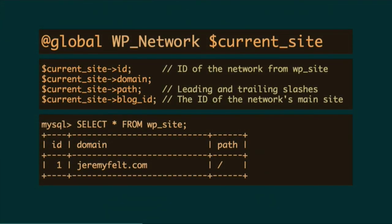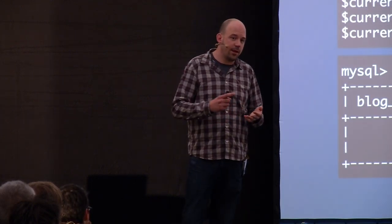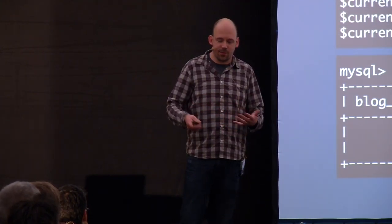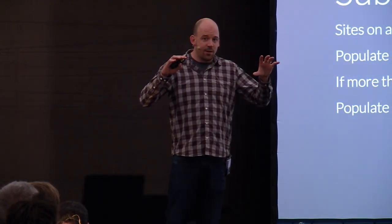The things it has to figure out first — there are two globals in WordPress that are important for Multi-Site. Current site, which contains the current network. The WP_Network object exists as current_site and contains the ID of the network, the ID of the main site, and the path of the network. And then similarly, for whatever the current site is, there's a current_blog object — that contains a WP_Site object with the ID of the site, the ID of its network, its domain and path, and some other things like archived, spam, and deleted.